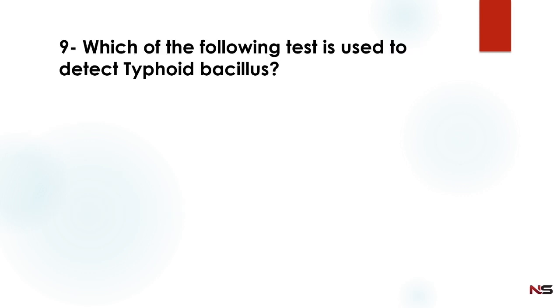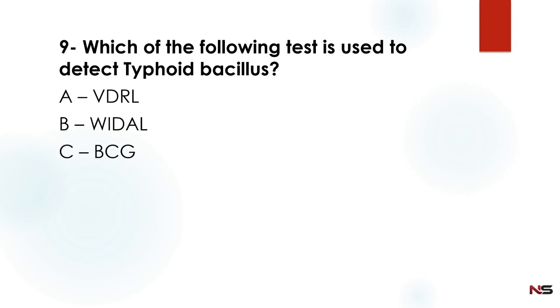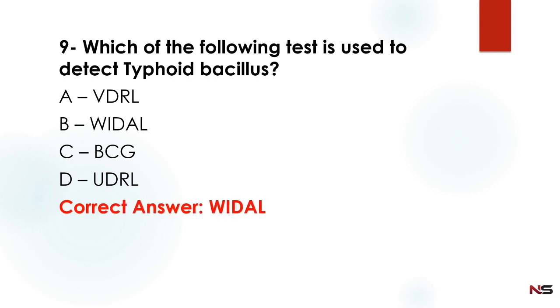Which of the following tests is used to detect typhoid bacillus? Option A: VDRL, Option B: Vidal, Option C: BCG, Option D: UDRL. The correct answer is option B — Vidal. The Vidal test is used to detect typhoid bacillus.